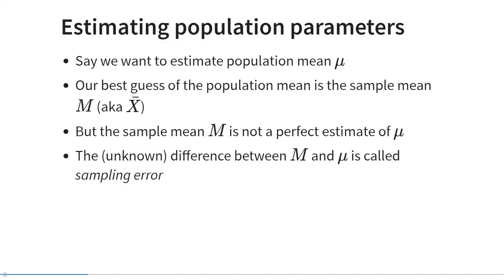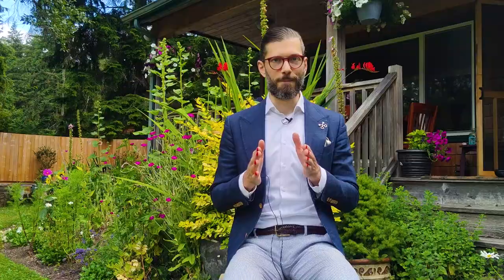Let's talk about the process of estimating population parameters. Let's say we want to estimate the population mean mu. All we have access to, however, is a sample, so we calculate the sample mean m, sometimes also indicated as x bar. But this sample mean is not a perfect estimate of the population mean mu — there's a difference between them. And we call this unknown difference between mu and the estimator of mu, m, the sampling error.